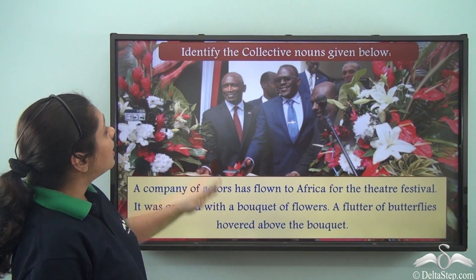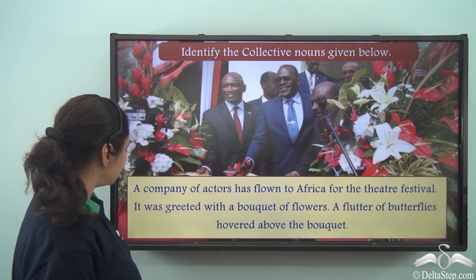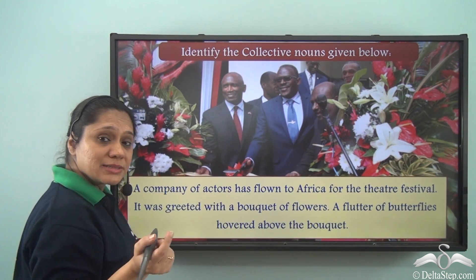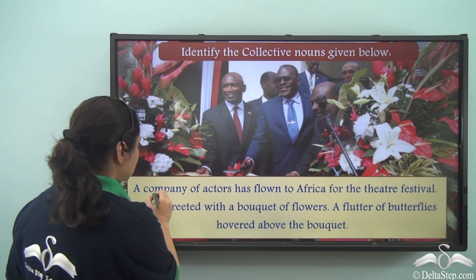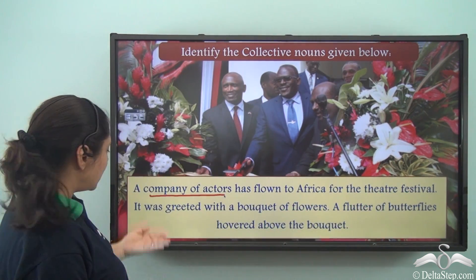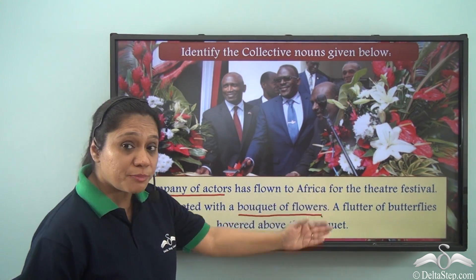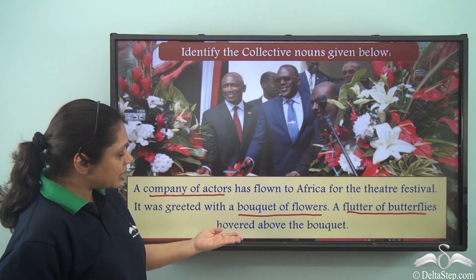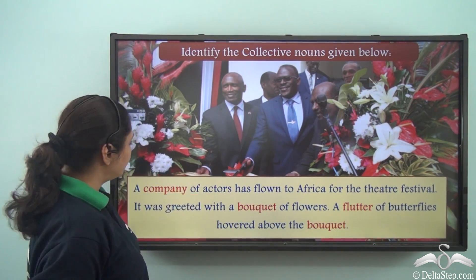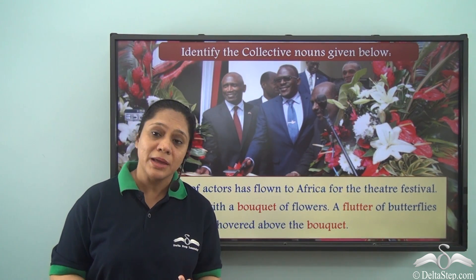Now let us do this exercise — identify the collective nouns: 'A company of actors has flown to Africa for the theatre festival. It was greeted with a bouquet of flowers. A flutter of butterflies hovered above the bouquet.' Company is a collective noun showing a group of actors. Bouquet is a collective noun showing a collection of flowers. Flutter is a collective noun, and bouquet appears again as a collective noun. So our collective nouns here are company, bouquet, and flutter.